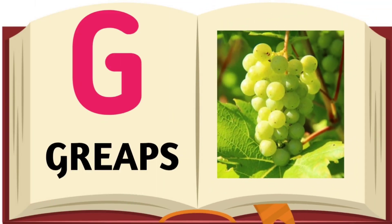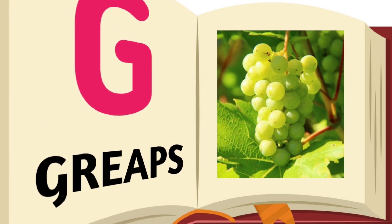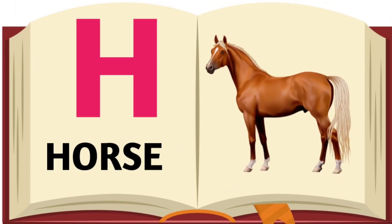G for Grapes, Grapes means Angur. H for Horse, Horse means Ghoda.